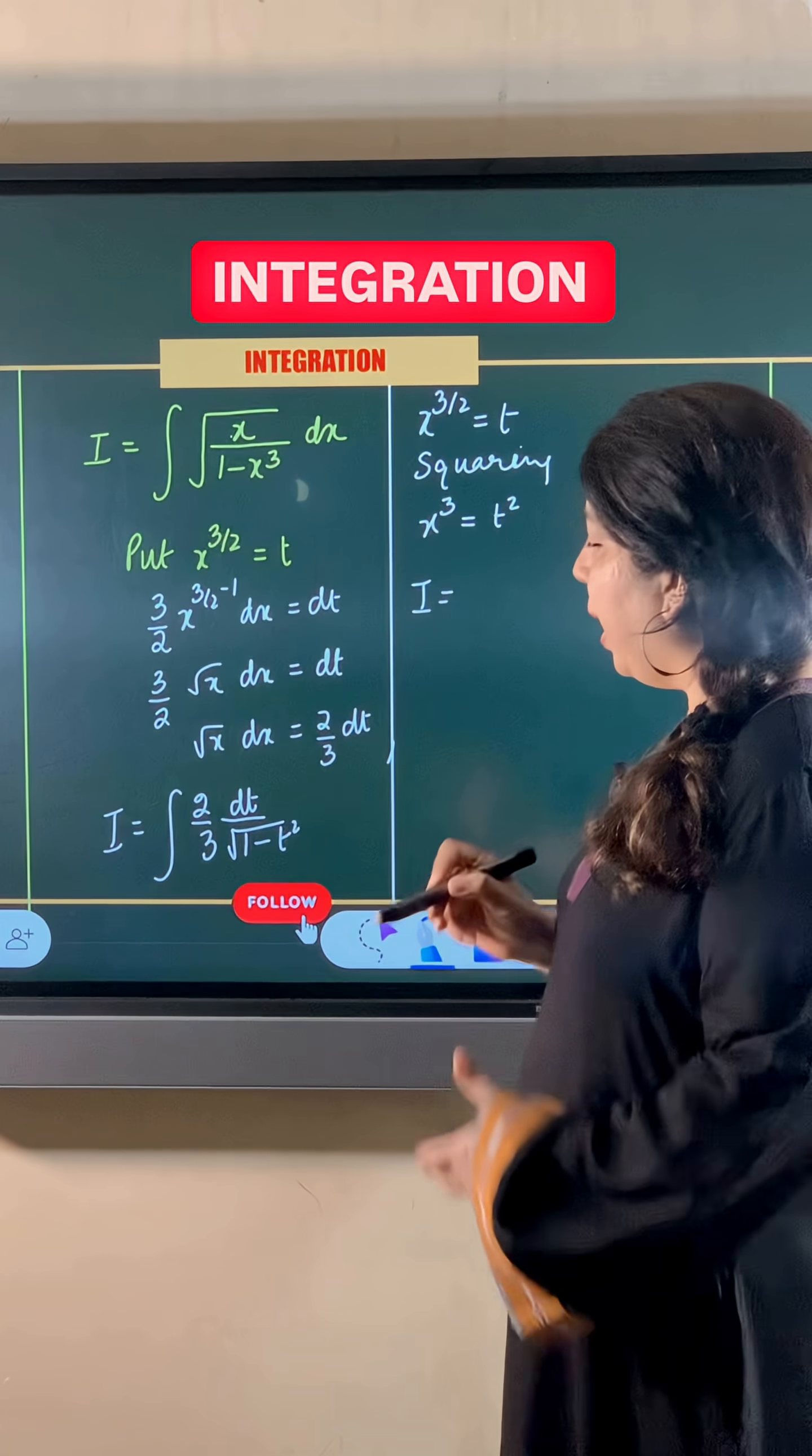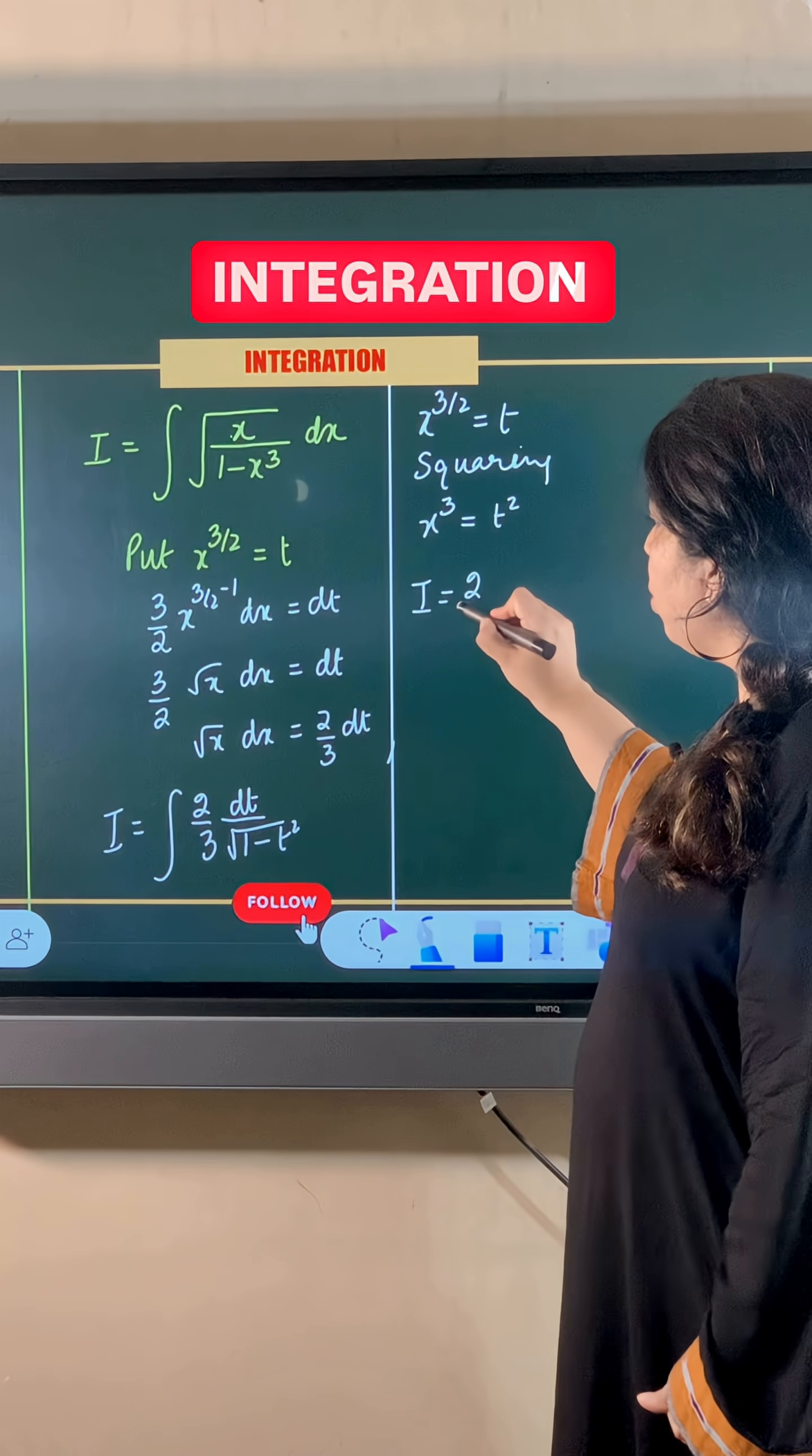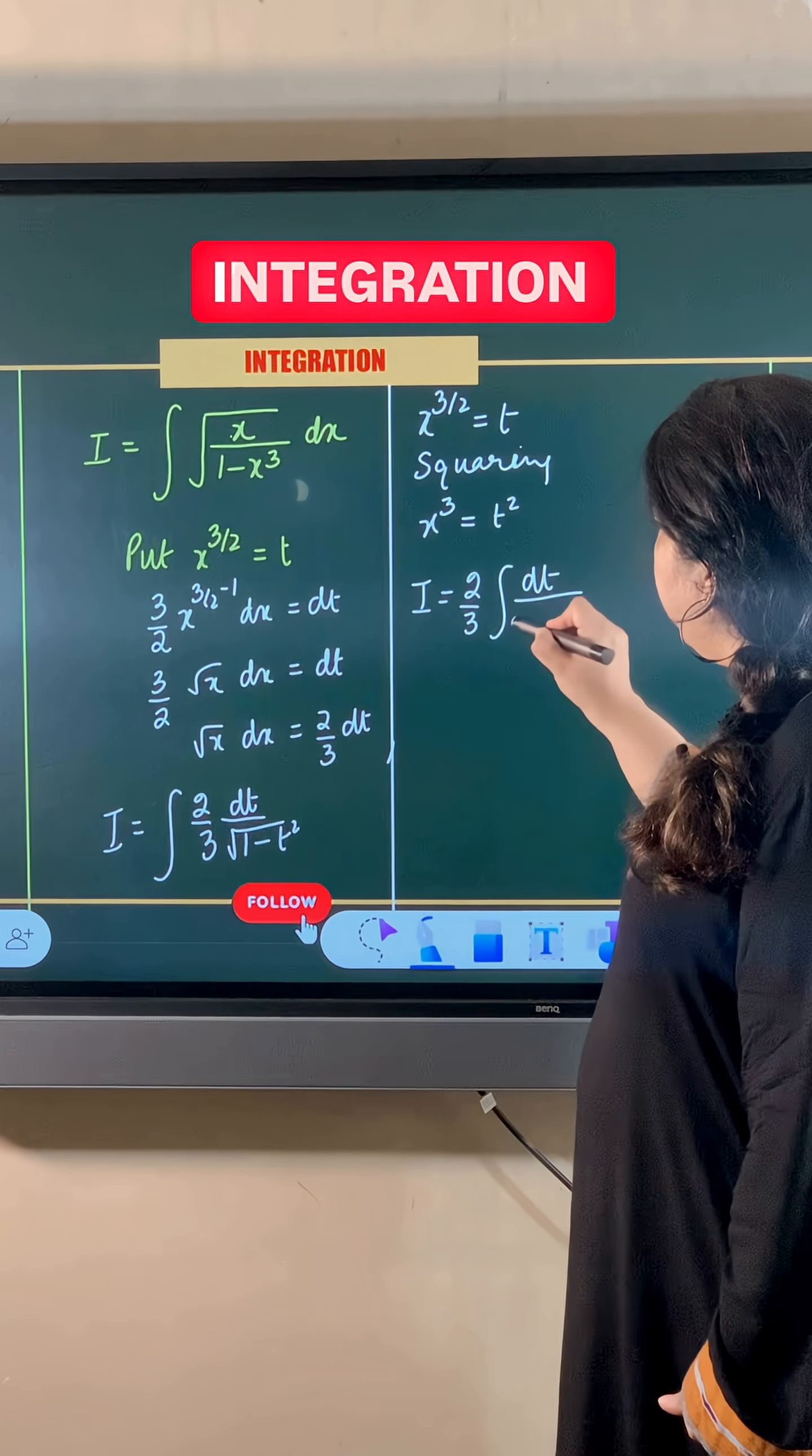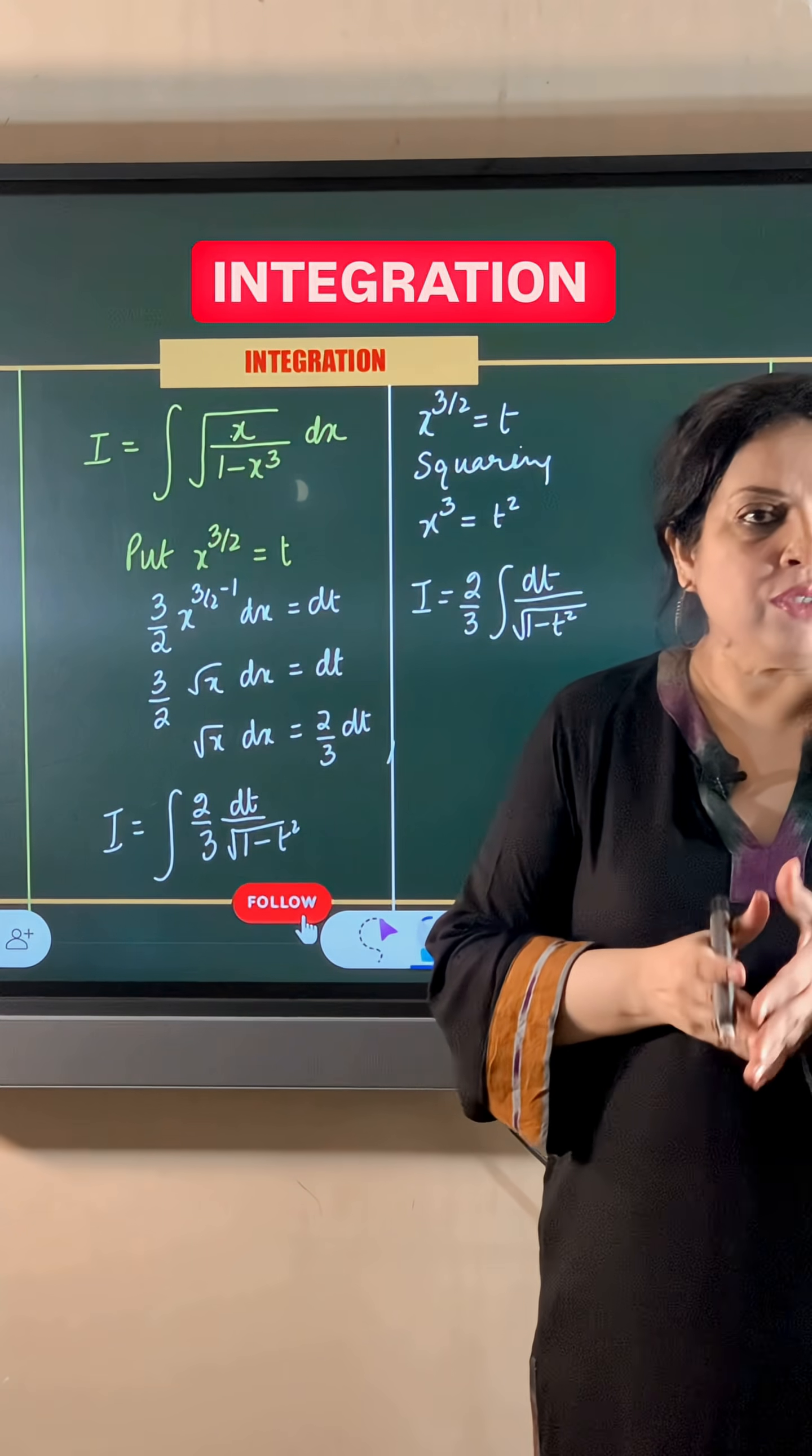So my integral has simplified beautifully. So this becomes 2 upon 3 dt, and in the denominator, I have 1 minus t square. Now integral of sine inverse t,